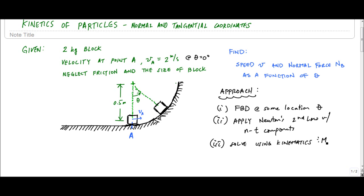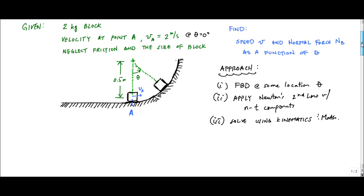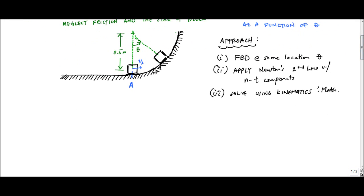This is really typical for a lot of dynamics problems in kinetics — you're going to use kinetics to set up your equations of motion or Newton's second law, you end up with two equations, and then you'll have to use some kinematics — position, velocity, acceleration relationships — and math to solve for whatever it is you need to find.